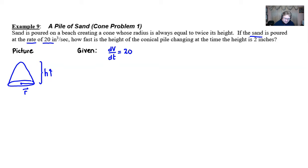We are out to find how fast is the height changing, so we're looking for dh/dt specifically when the h value is 2.